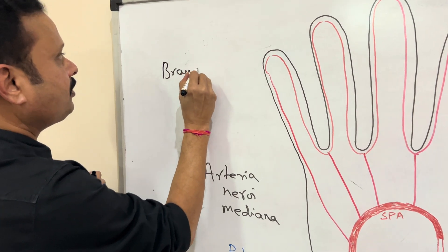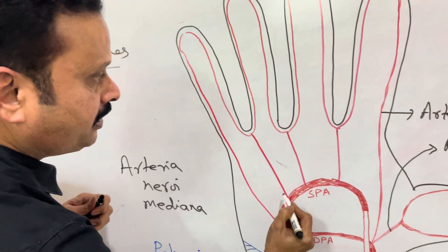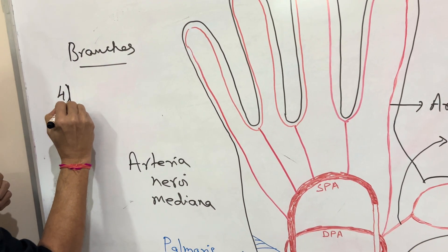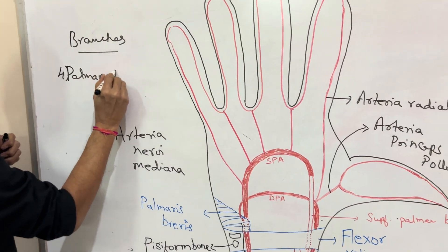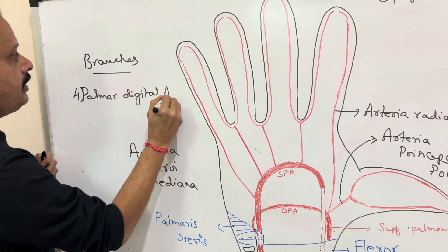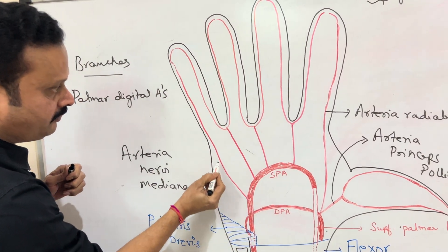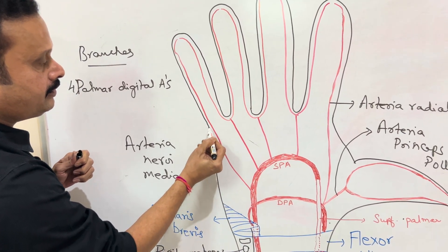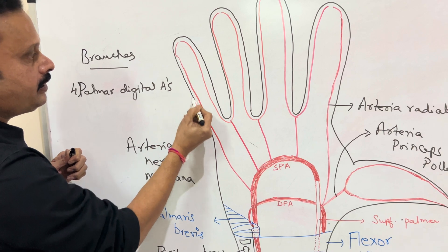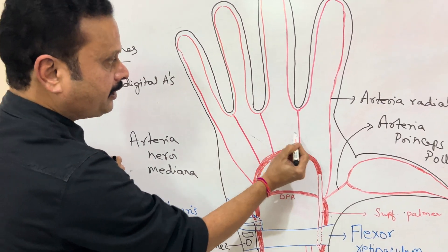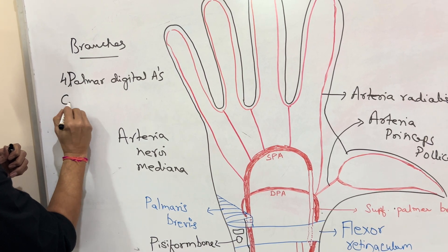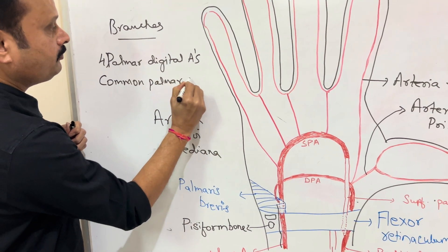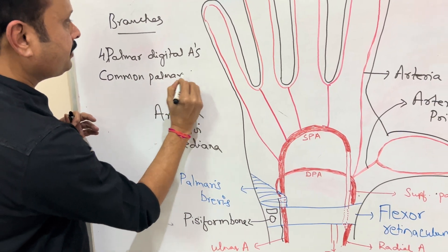The branches of the superficial palmar arch are four palmar digital arteries. Of these four, the first and most medial one runs distally to supply the ulnar side of the little finger. However, the remaining three branches form common palmar digital arteries.